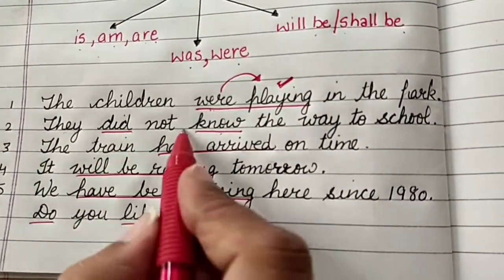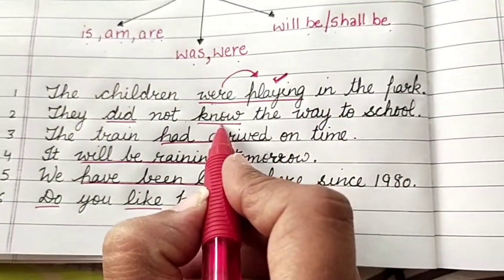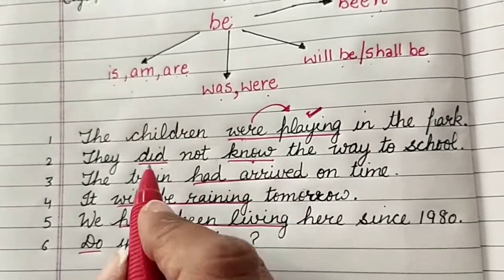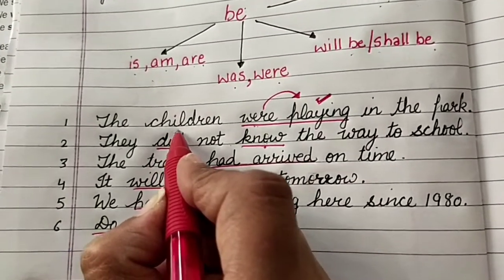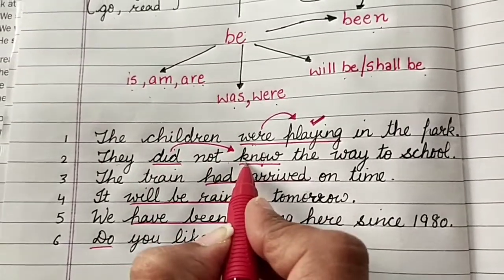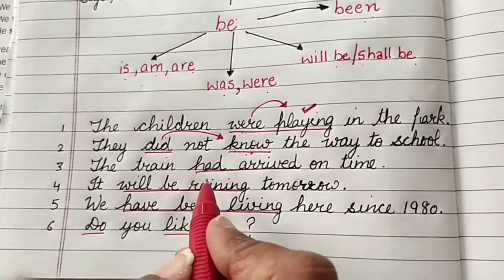Similarly, know here. They did not know the way to school. So know is the main action. Where, this did is just completing it and helping in it, helping the main verb.